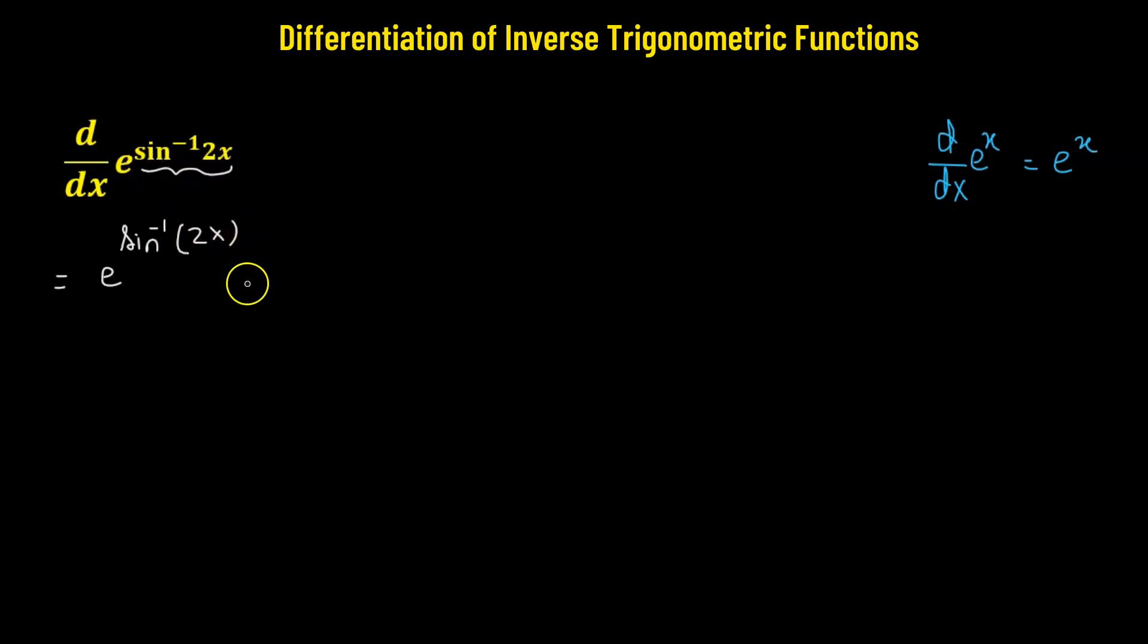Now, we'll apply the chain rule, so that means we need to multiply it to the derivative of sine inverse of 2x.